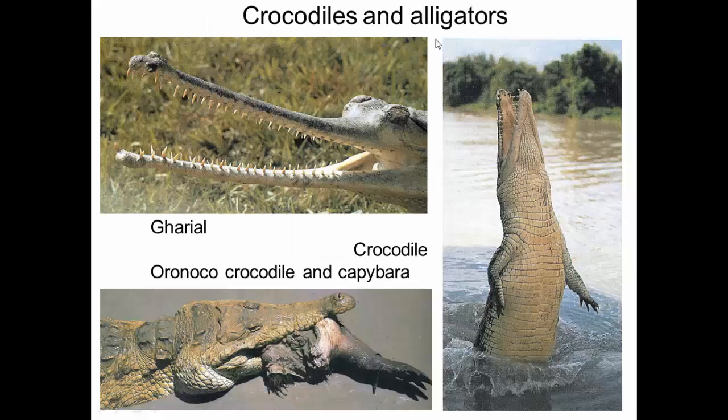Crocodiles and alligators are predators — you can see this one eating a capybara. This is an alligator with its wide mouth. This is a gharial, which has a very long, thin mouth used like a net — they hold it open and swing it back and forth through the water to snag fish. If you ever have to fight one, their muscles are great at closing and can crunch through bone, but they have almost no musculature to open back up. So if you avoid that first bite, you can hold their mouth shut with just one hand.